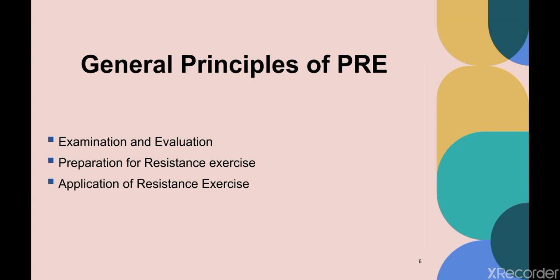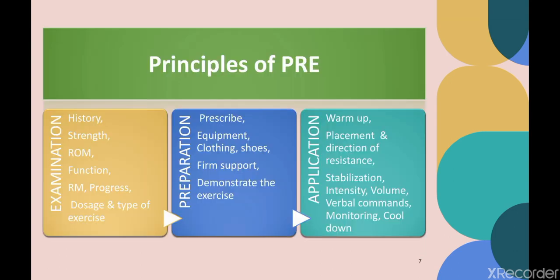The general principles of progressive resistance exercises involve three components: examination and evaluation, preparation for resistance exercise, and application of resistance exercise. During examination, the therapist takes patient history, assesses strength, measures range of motion, performs functional evaluation, determines repetition maximum (RM), monitors progress, and decides the dosage and type of exercise.